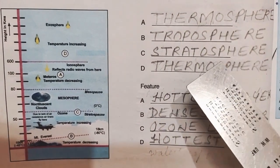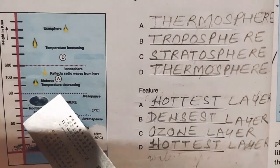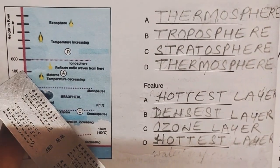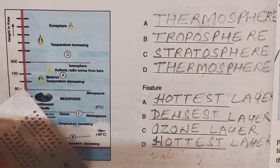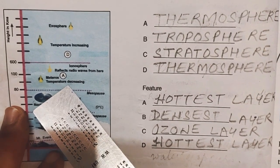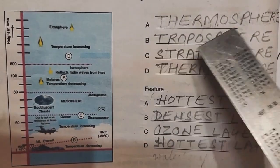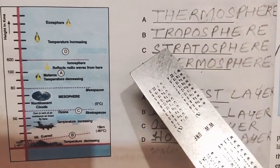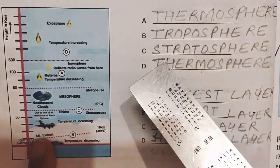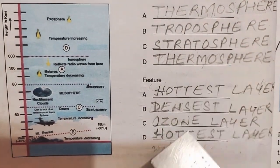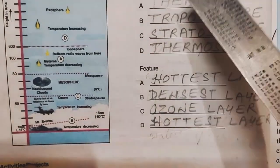A is here and you can see 80 to 100 km. It lies in thermosphere. So write A, thermosphere. B, troposphere. C, stratosphere. And D, thermosphere.